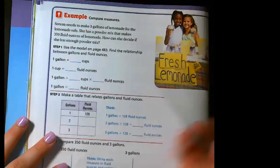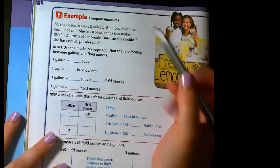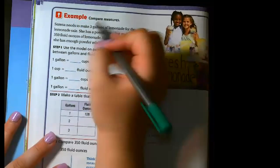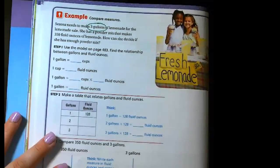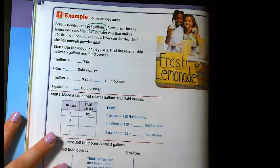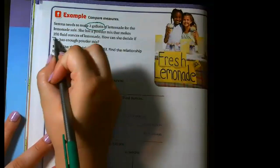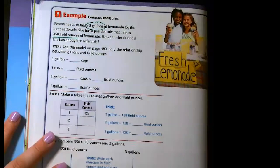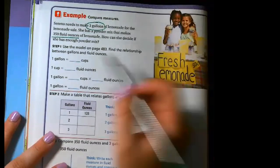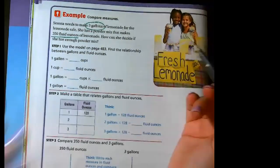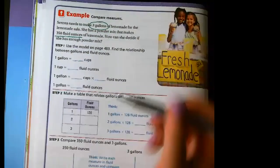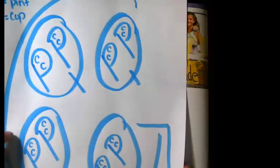On our next example, it says Serena needs to make three gallons of lemonade for a lemonade sale. She has a powdered mix that mixes 350 fluid ounces of lemonade. How can she decide if she has enough powdered mix? It says use the model on page 483 to help you, or what we're going to use is this little chart that we made ourselves.